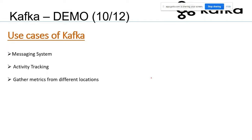Another use case is gathering metrics from different locations. For example, if you visit a mall, the next morning your Android phone might ask for feedback about that place. The phone's application knows you visited because of location data gathering — and they put that feedback on a public website so others can review it. Kafka can be used for this kind of location-based metric gathering as well.